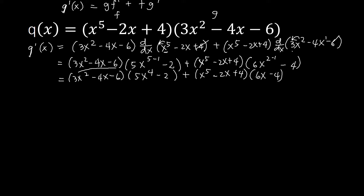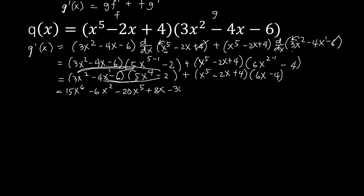So simplifying, we just distribute. This is now 3x squared times 5x to the power of 4: 3 times 5 is 15, x to the power of 2 plus 4 is 6. Then distribute to the other one: negative 4x times 5 is negative 20x to the power of 1 plus 4, that's 5. Distribute negative 4x to the other one: negative 4 times negative 2 is positive 8, then copy x. We go for negative 6, distributing to 5x to the power of 4: negative 6 times 5 is negative 30, copy x to the power of 4. Negative 6 times negative 2 is positive 12.